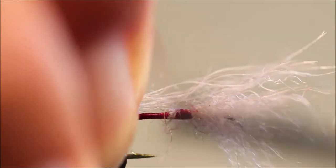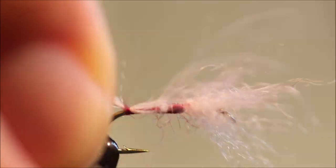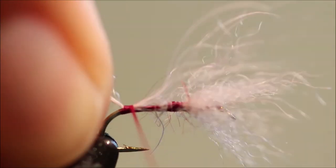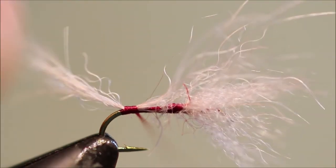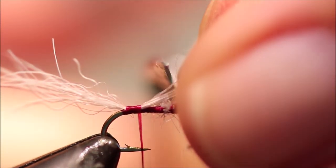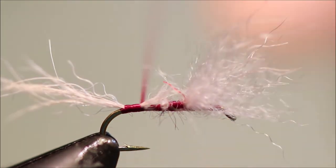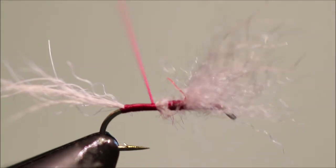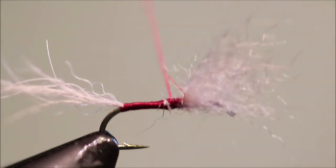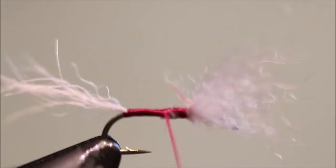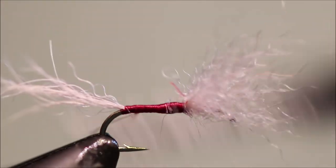Tail length is the length of the body. Catch them in. I'll take a turn or two and cock them up and lock them in. Then I'll trim the waste the length of the body, or the length of the abdomen.